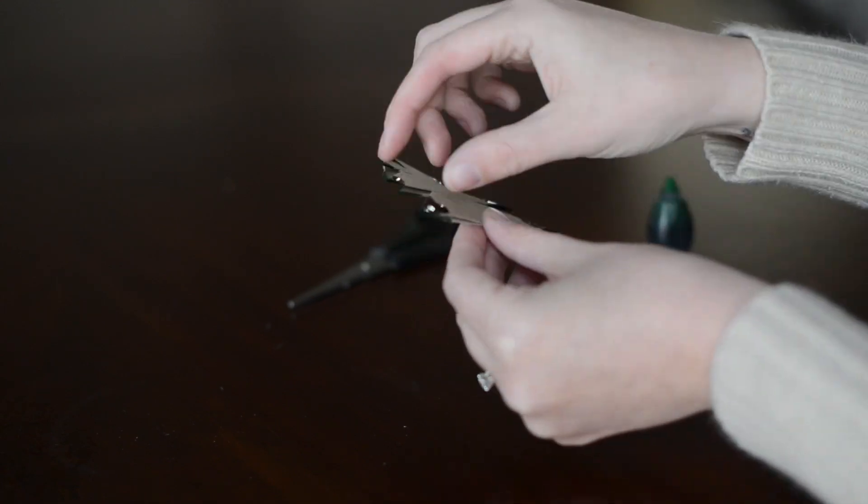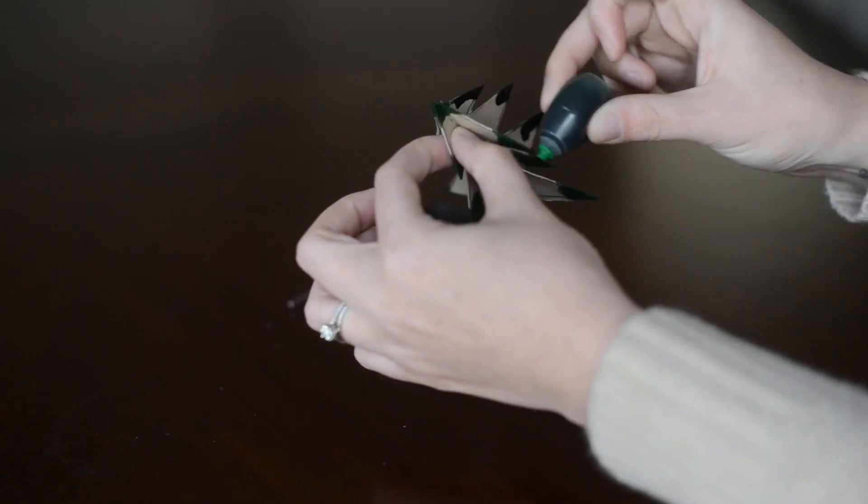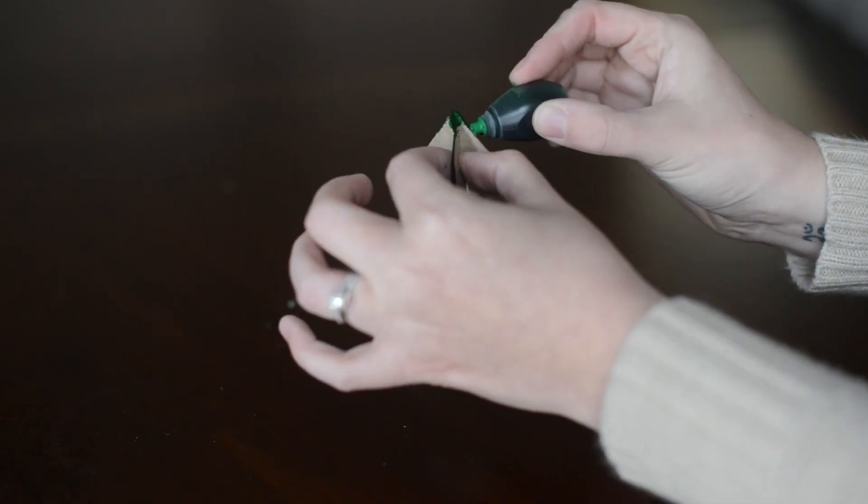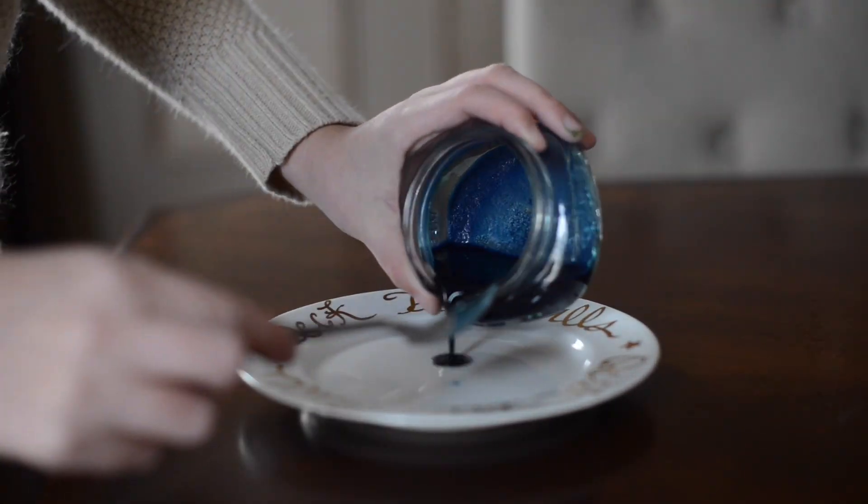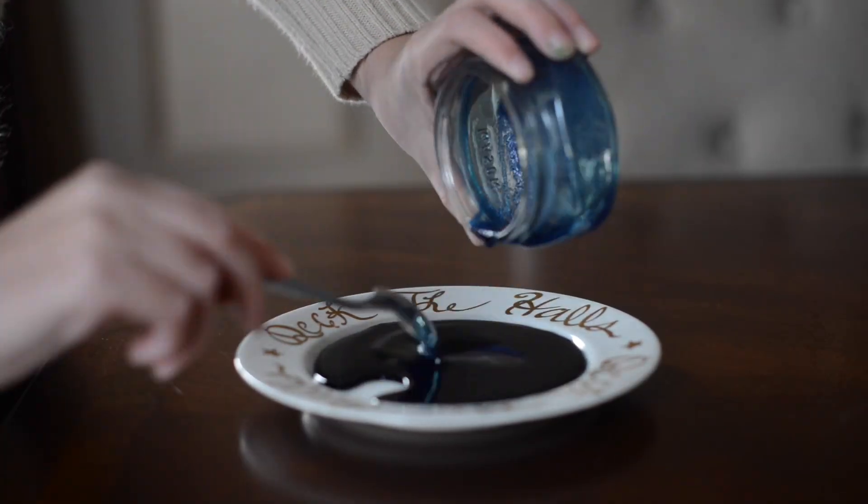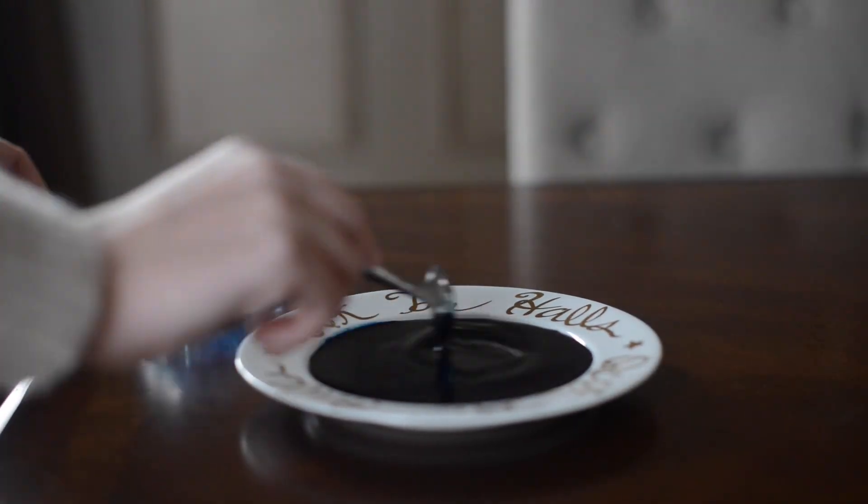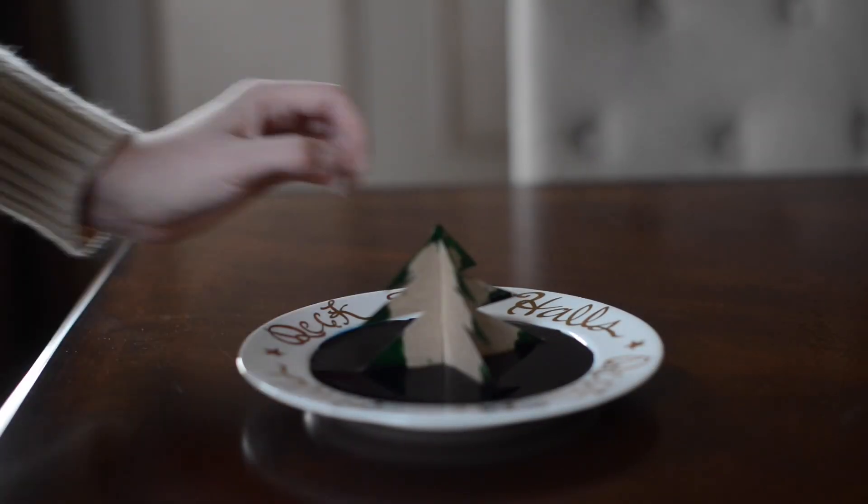I use green but you could use blue or red or any kind of colors that you want to use. And then I put my mixture on the plate and added my tree. And then just watched it grow crystals.